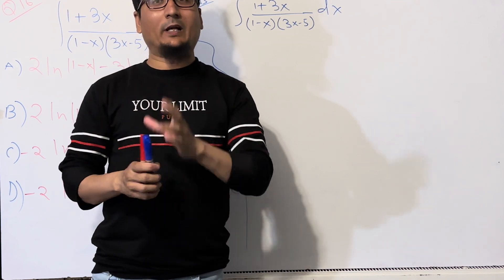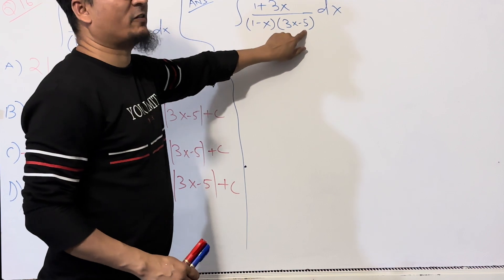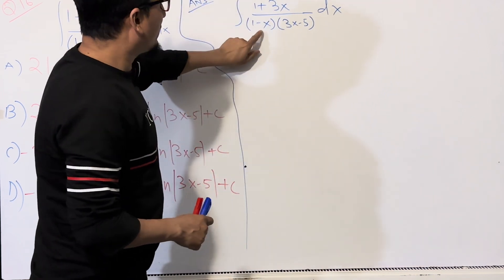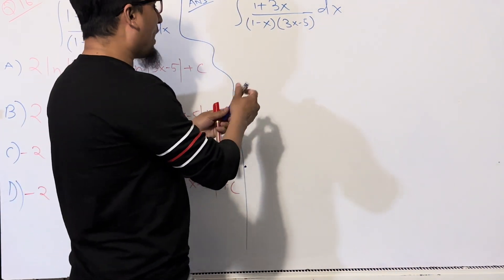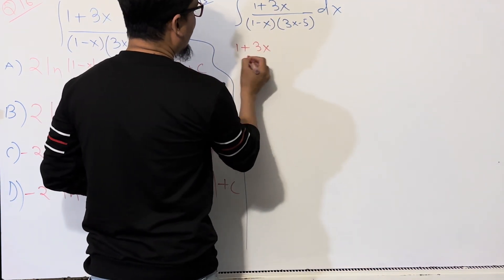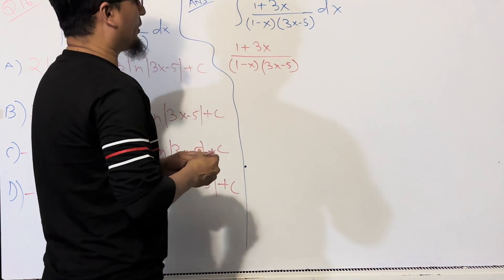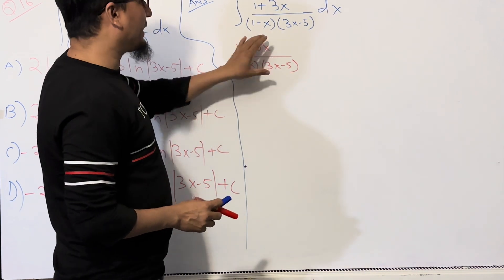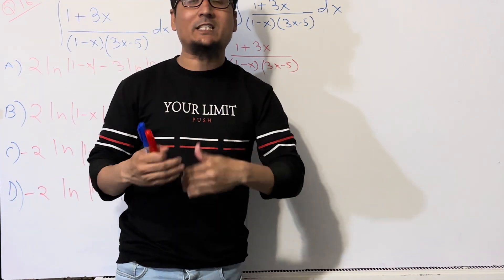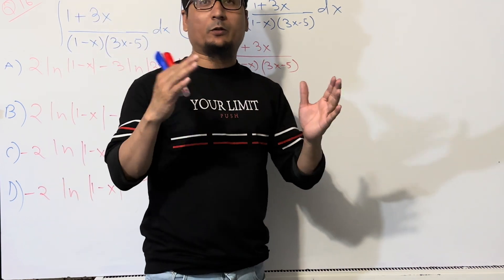Remember, in the denominator, if you find two different linear factors — for example, (1 - x) and (3x - 5) — we have two different linear factors. If you see two linear factors in the denominator, then you apply partial fractions. Copy the expression: (1 + 3x) / [(1 - x)(3x - 5)]. This one term needs to be broken into two different terms.